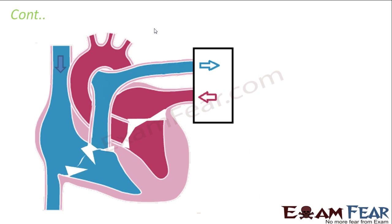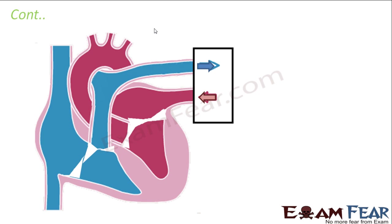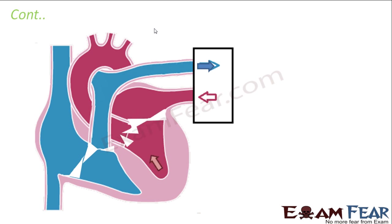Here you can observe the same process once again in the animation: deoxygenated blood flowing from the right auricle to the ventricles, then through the pulmonary valve out to the lungs; and oxygenated blood from the lungs entering the left auricle, flowing to the left ventricle through the bicuspid valve.